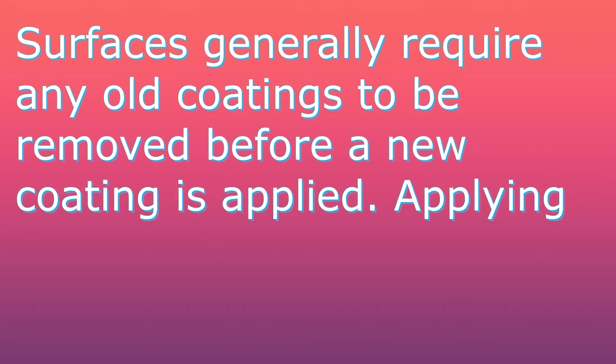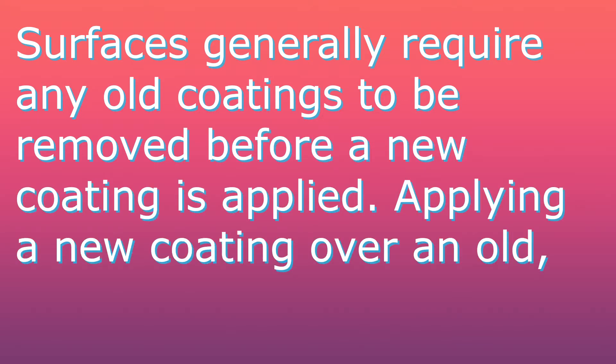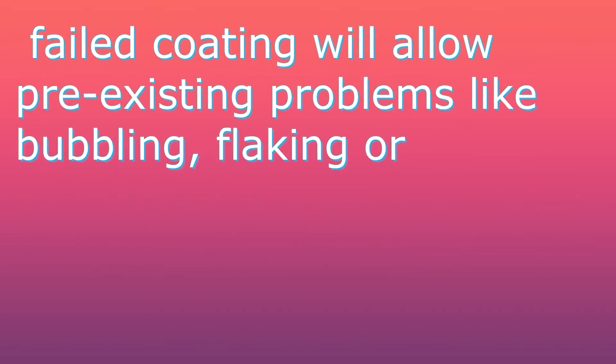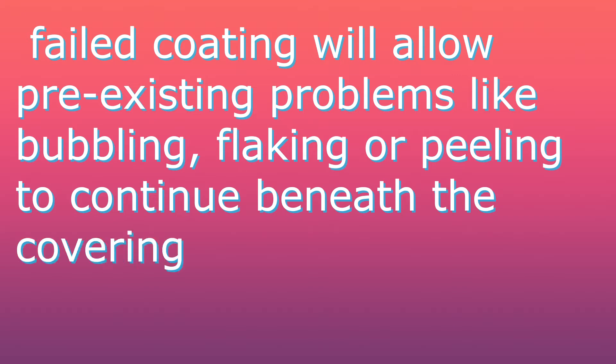2. Remove Old Coatings. Surfaces generally require any old coatings to be removed before a new coating is applied. Applying a new coating over an old, failed coating will allow pre-existing problems like bubbling, flaking, or peeling to continue beneath the covering layer.